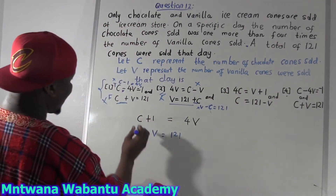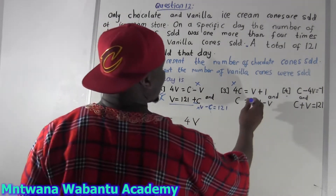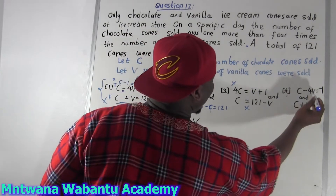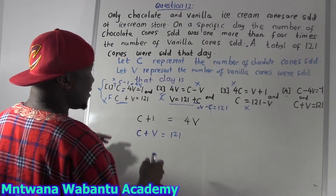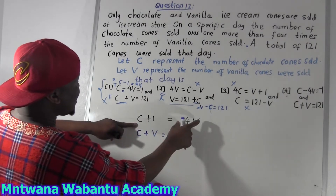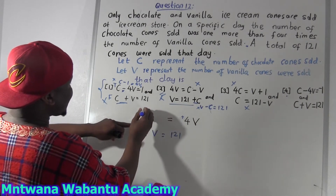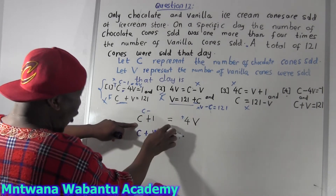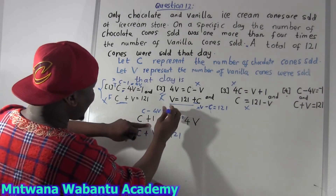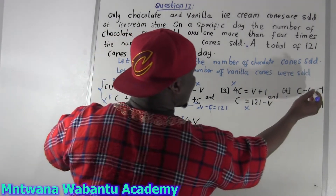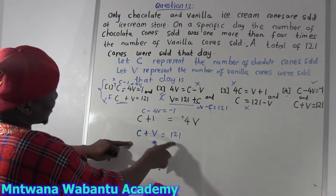Now option four: C minus 4V. This is positive — take it back across the equals sign it becomes C minus 4V equal to... and then the plus one goes over to become minus one. That's looking promising. For the second equation: C plus V equals 121. Easy.